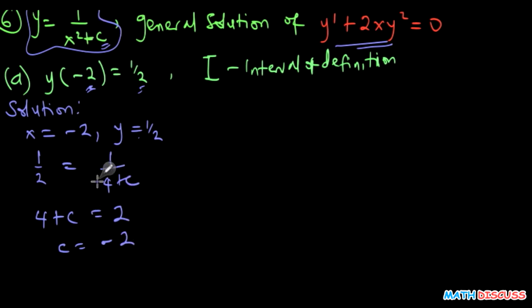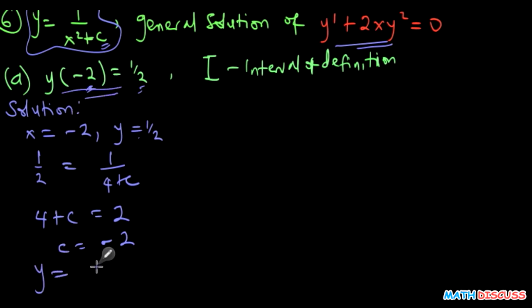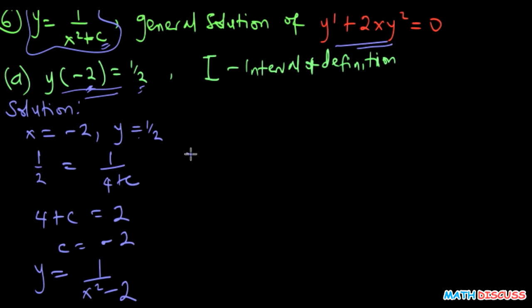Since c equals negative 2, the particular solution that satisfies this initial condition is y equals 1 over x squared minus 2. Now this brings us to the next part: finding the interval of definition.